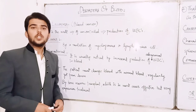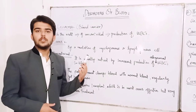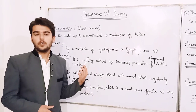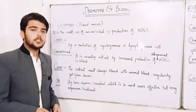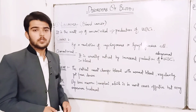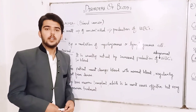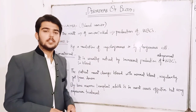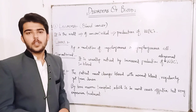Assalamu alaikum. Today we will discuss about diseases or disorders of blood. There are three types of diseases or disorders of blood. First, leukemia. Second, thalassemia. Third, oedema.